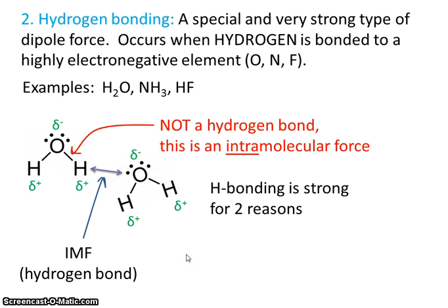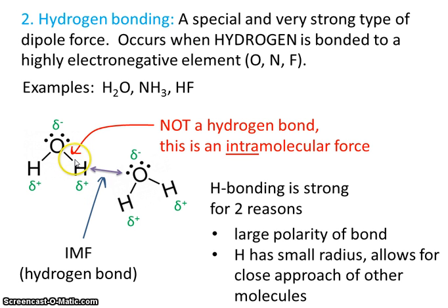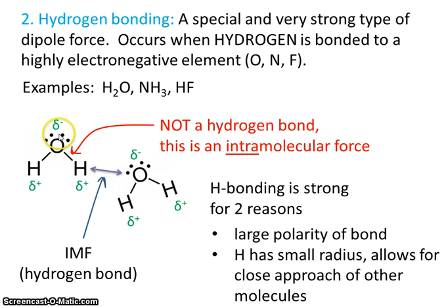There are two reasons why a hydrogen bond is so strong. The first is due to the large polarity of the bond — because oxygen is so highly electronegative, it has a lot of partial negative charge, leaving hydrogen with a lot of partial positive charge, creating a big disparity of charge. The second reason is that hydrogen has a small radius, which allows for the close approach of other molecules. Hydrogen is really just a proton, so because it's so small, the negative oxygen of another molecule can get very close to it. A hydrogen bond is nothing more than a strong type of dipole force, occurring when hydrogen is bonded to oxygen, nitrogen, or fluorine.